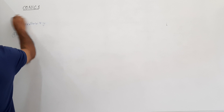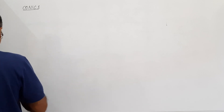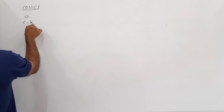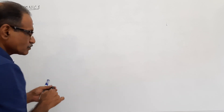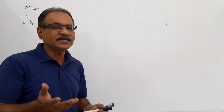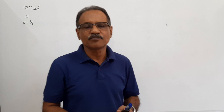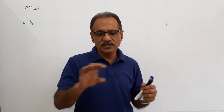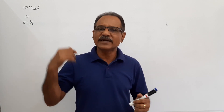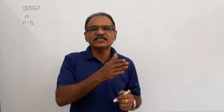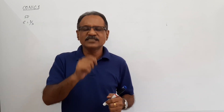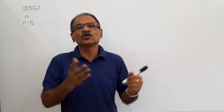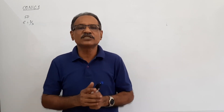Let's take a problem. The distance between directrix and focus is 50mm and eccentricity is 2/3. When eccentricity is 2/3, you are sure it is an ellipse. The specific wording of the question will be given in the description. You are asked to draw a conic — an ellipse — and draw normal and tangent at any point. That is the question.